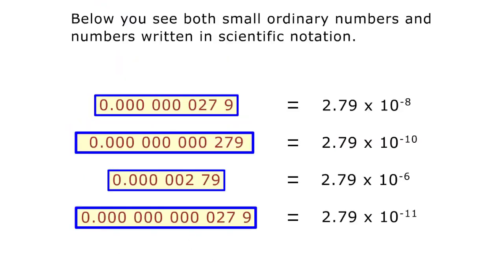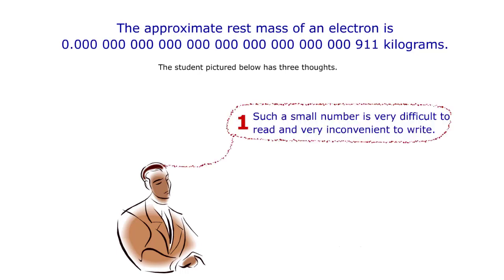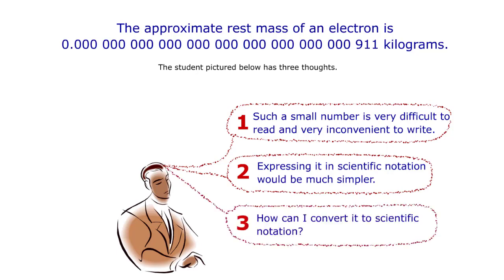Below you see both small, ordinary numbers and numbers written in scientific notation. The approximate rest mass of an electron is shown here. The student pictured below has three thoughts: such a small number is very difficult to read and very inconvenient to write. Expressing it in scientific notation would be much simpler. How can I convert it to scientific notation?